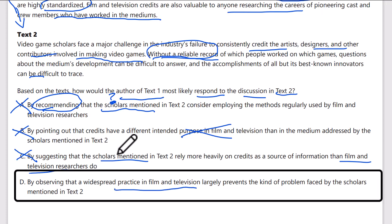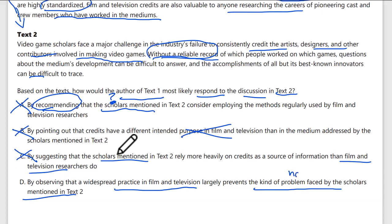Answer D says: by observing that a widespread practice in film and television — namely, credits — largely prevents the kind of problem faced by the scholars in text 2. Yes, the problem in text 2 is that video game contributors don't get credited. Text 1 observes that using credits as film and television does would prevent that problem. They're not recommending it — just observing. D is the correct answer.